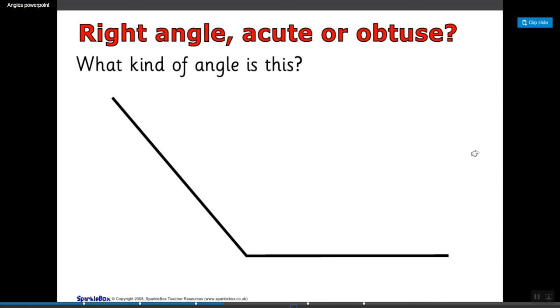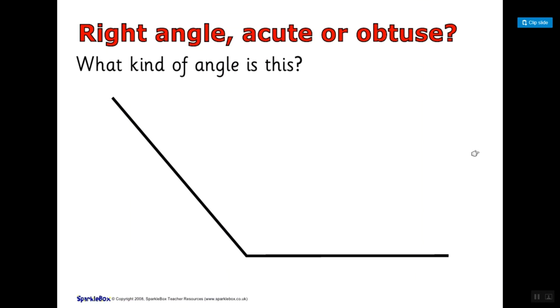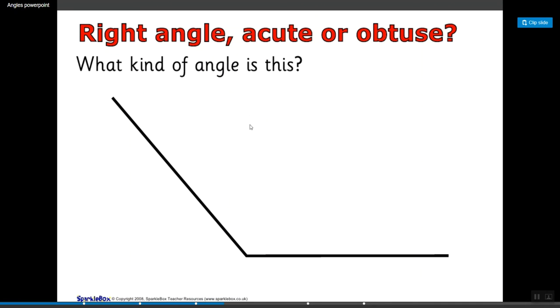Alright, so let's look at these. Right angle, acute or obtuse? What kind of angle is this? If we look at it, it's not quite straight up and down like a right angle, it's not smaller than a right angle, so it must be obtuse because it seems pretty big and open so it's obtuse.